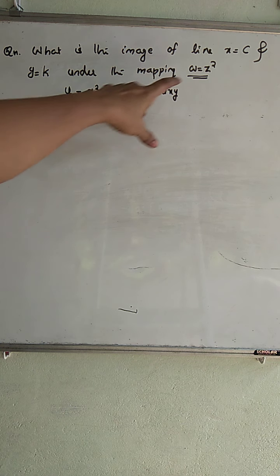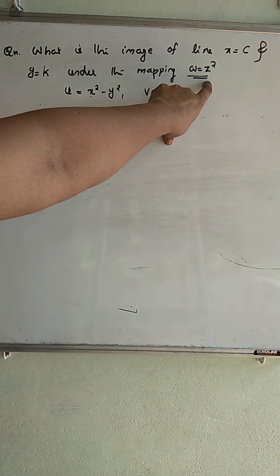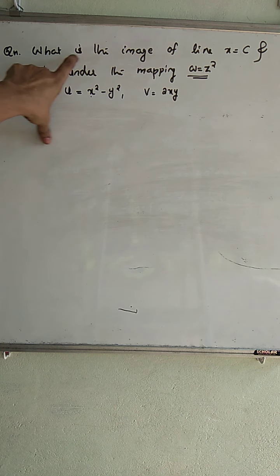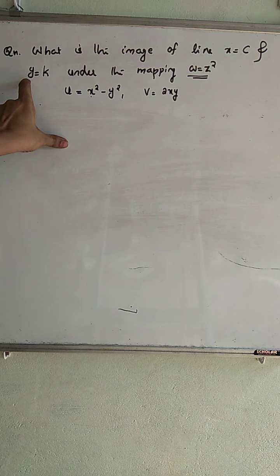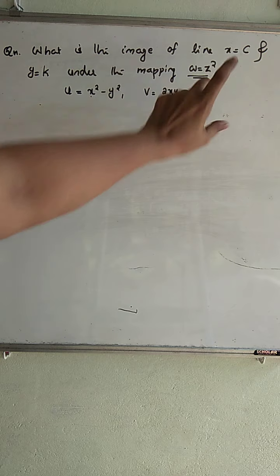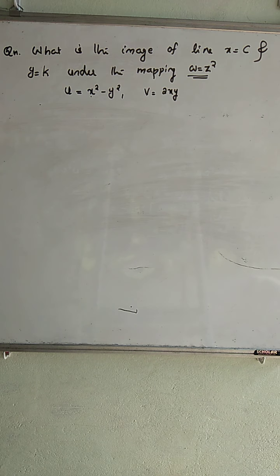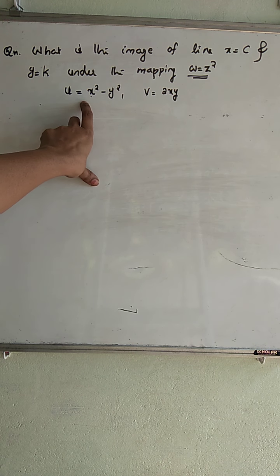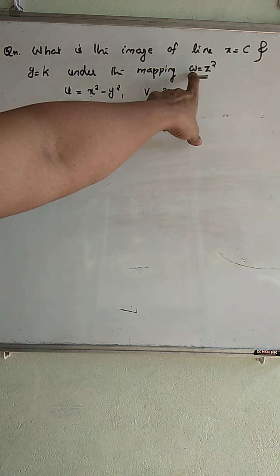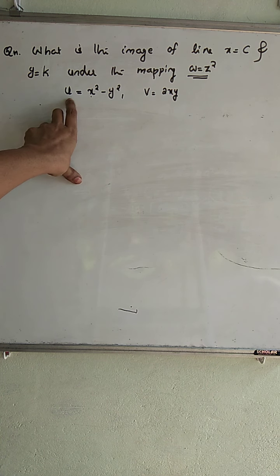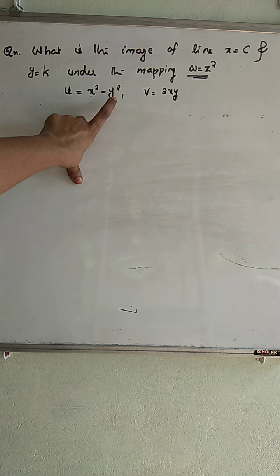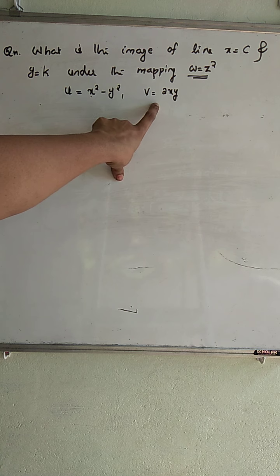We already discussed the mapping W equal to Z square. The question is: what is the image of the line X equal to C and Y equal to K under the mapping W equal to Z square? We know that by comparing W equal to Z square, we get U equal to X square minus Y square and V equal to 2XY.